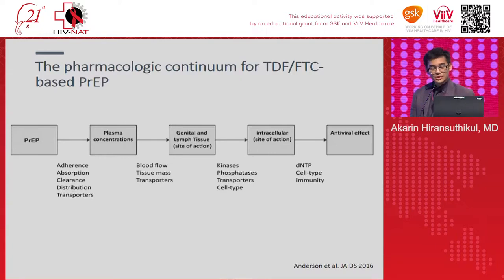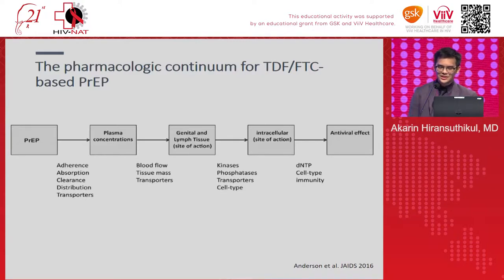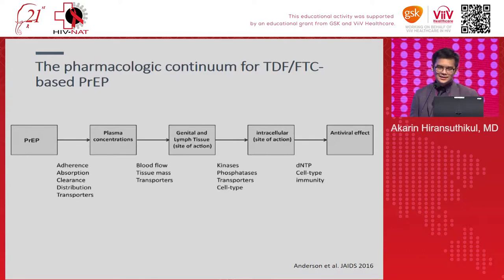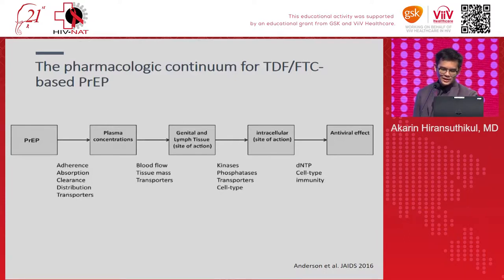Once the drug reaches blood circulation, you expect it to reach the target tissue. Once it reaches the target tissue, you need enzymes to ensure it can enter intracellularly and convert from substrate form into its active form before achieving antiviral effect. From this figure, the current hypothesis for drug interaction falls into two groups: transporters and enzymes.